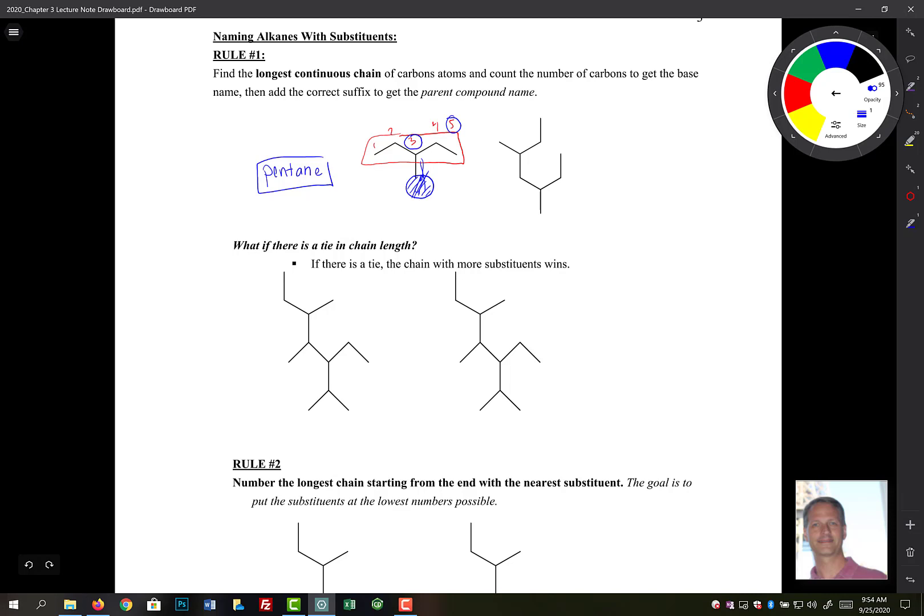We have a methyl group off of this. In fact, it's at carbon number three. So this would be 3-methylpentane. And we're going to get to that in a second. So we're going to get to this naming of substituents in just a second. Our first goal right now, though, is just simply to find the longest carbon chain.